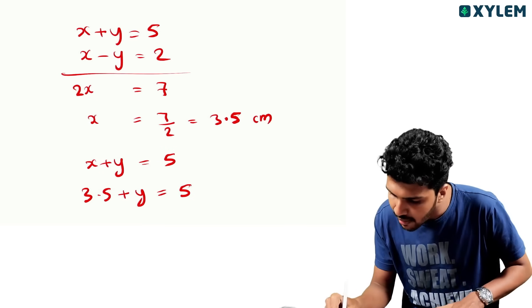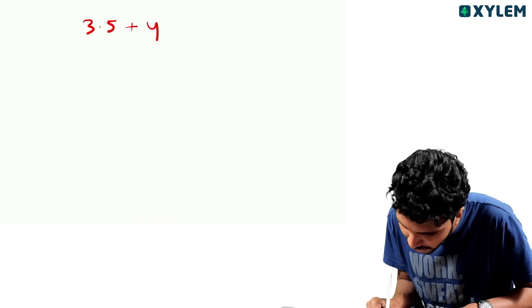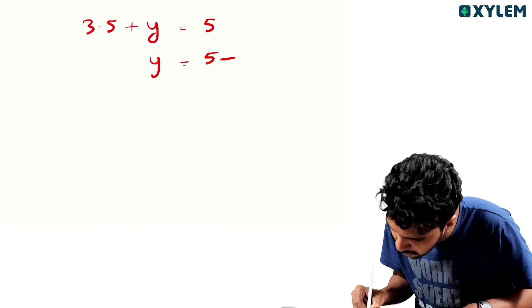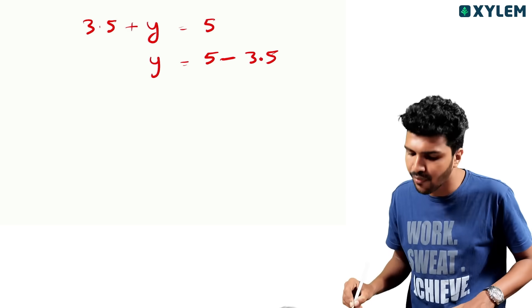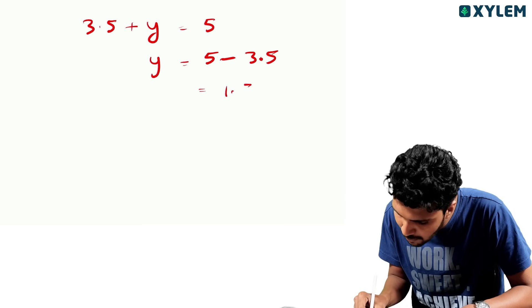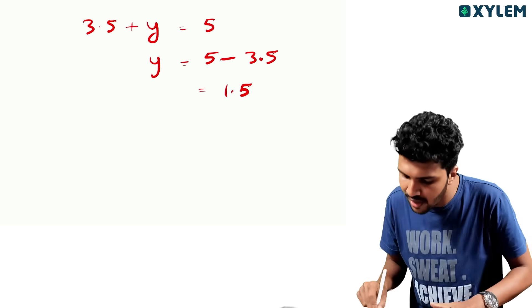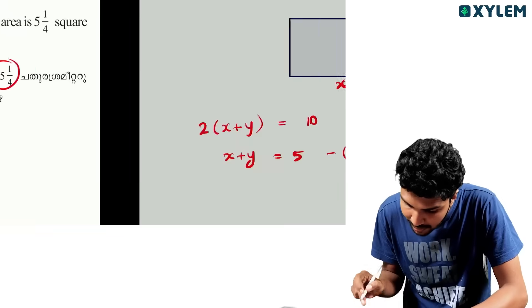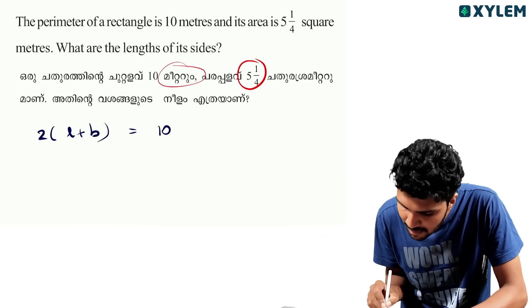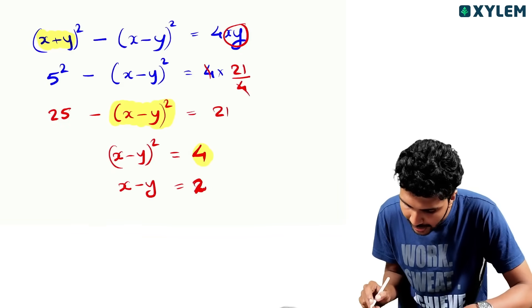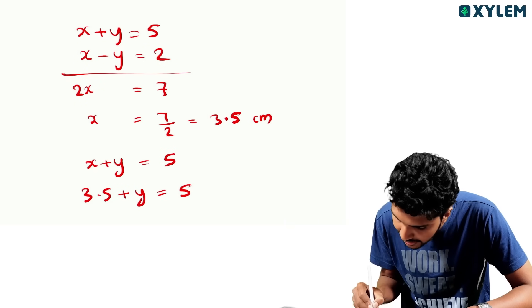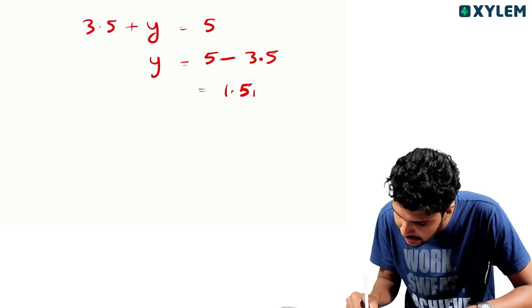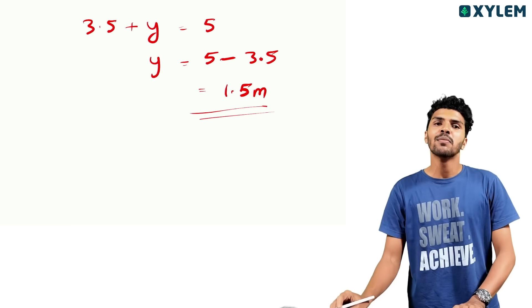5 minus 3.5 equals 1.5. So x equals 3.5 meters and y equals 1.5 meters.